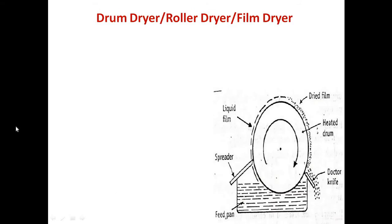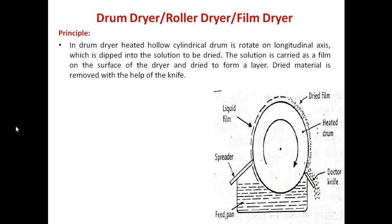The drum dryer, also known as the roller dryer or film dryer, operates on the following principle: a heated hollow cylindrical drum is rotated on a longitudinal axis. This drum is dipped in the solution meant for drying. As the drum moves, a layer of the solution sticks to it, forming a film on the surface of the drum.